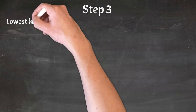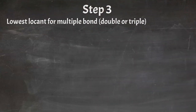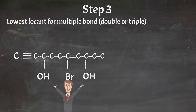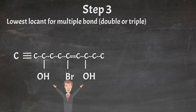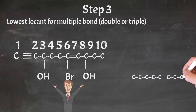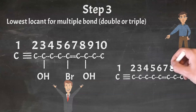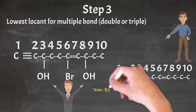Criteria number 2: number your chain from the end closest to the multiple bond — either a double bond or a triple bond. This structure has two OH groups. Whether you number the chain from left or from the right side, the functional group falls at carbon number 3. So we follow the second criteria. In this structure we have two multiple bonds. If we start from the right side, the multiple bond falls at carbon number 4. If we start from the left end, the multiple bond falls at position 1. We will number the chain from left to right. For a structure without a functional group, the left end is closest to the multiple bond so we number from the left side.